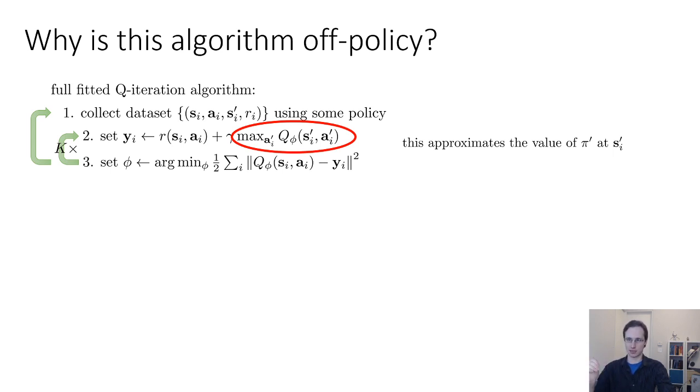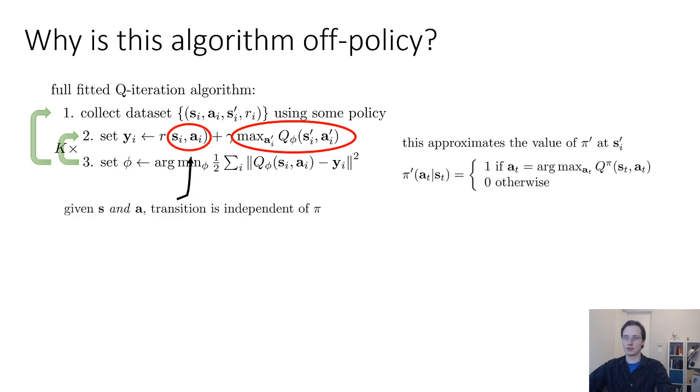So this max approximates the value of pi prime, our greedy policy, at s_i prime. And that's why we don't need new samples, we're basically using our Q function to simulate the value of new actions. So given a state and an action, the transition is actually independent of pi, right? If s_i and a_i are fixed, no matter how much we change pi, s_i prime is not going to change, because pi only influences a_i, and here a_i is fixed.